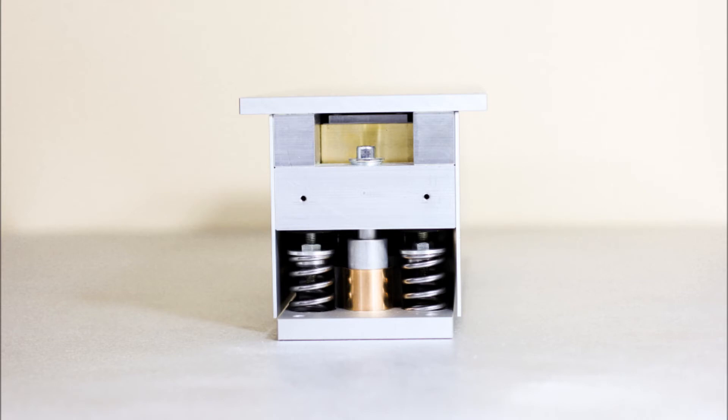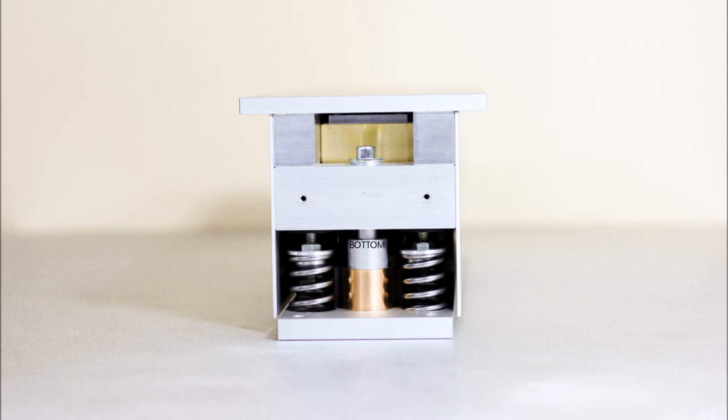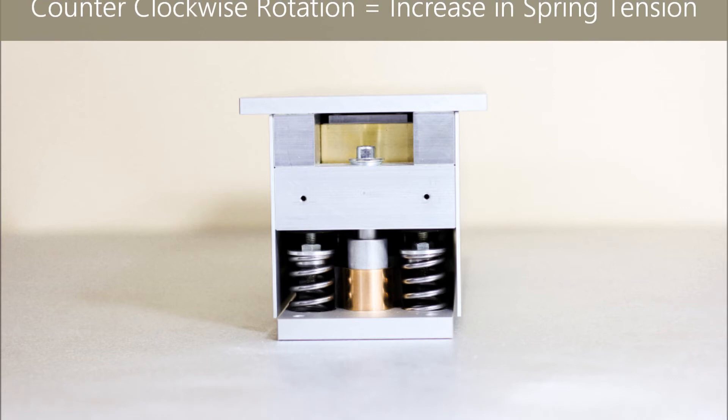If the crossbar is too high and is resting at the top of the central column, you'll need to decrease the spring tension by rotating the adjustment nut clockwise. If the crossbar is too low and is resting at the bottom of the central column, you'll need to increase the spring tension by rotating the adjustment nut counterclockwise.